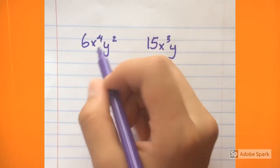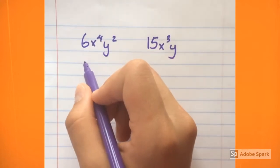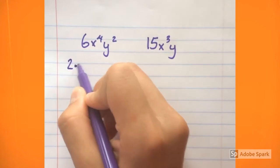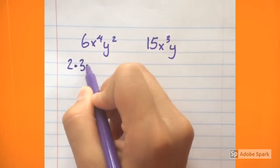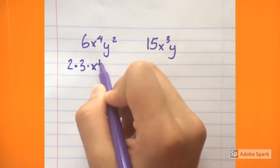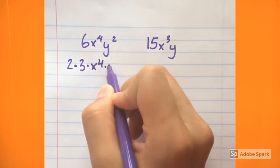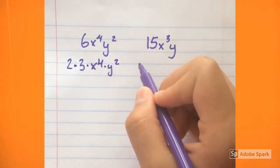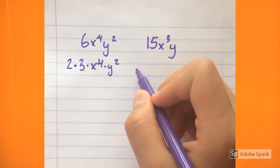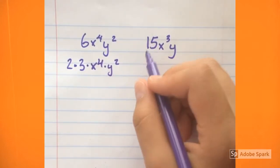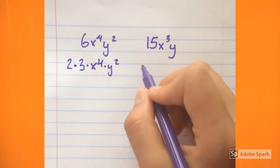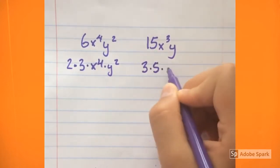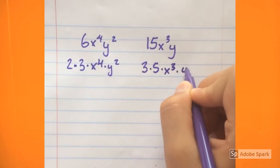The prime factorization of 6x to the 4th power, y to the 2nd power is 2 times 3 times x to the 4th power, times y to the 2nd power. And the prime factorization of 15x to the 3rd power, y is 3 times 5 times x to the 3rd power, times y.